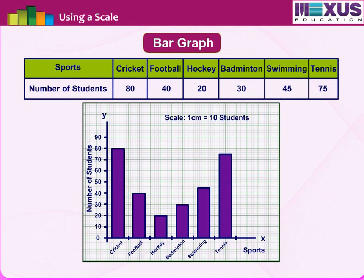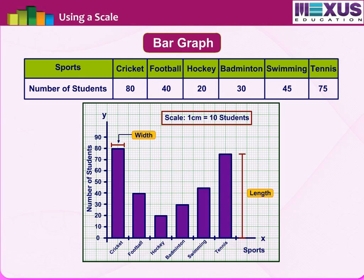By looking at a bar graph, we can get information such as the mode, which is the longest bar. A bar graph is a representation of numbers using bars of uniform width, and the length of the bars depends upon the frequency and the scale you have chosen.